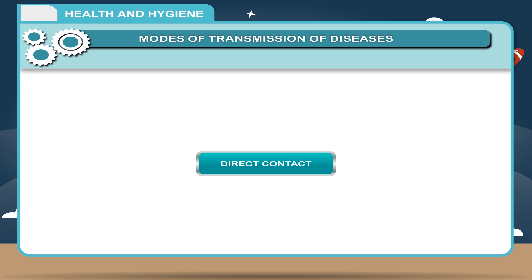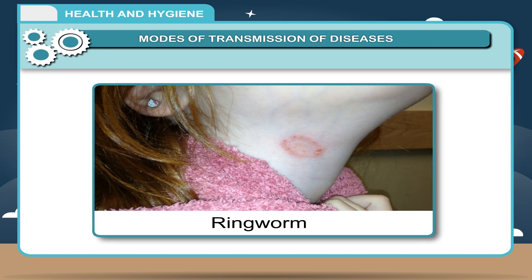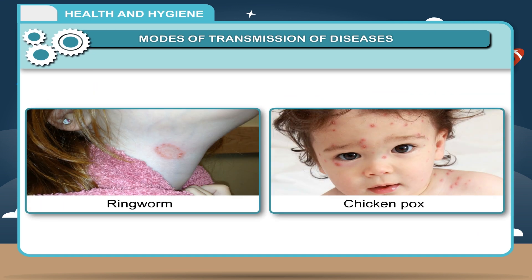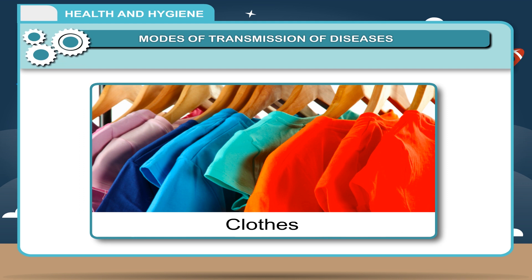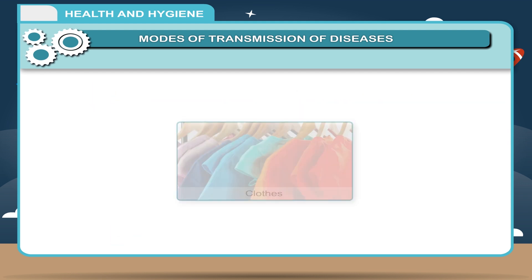Direct Contact: Diseases like ringworm and chicken pox spread through direct contact. If a healthy person uses clothes or other things of an infected person, he or she may get infected by the disease.